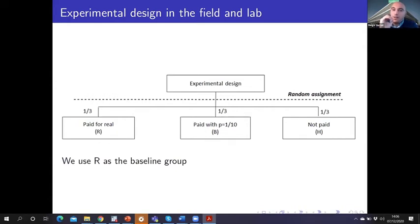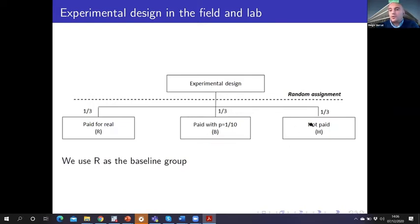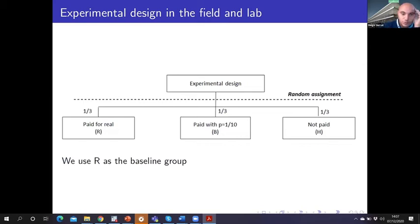Each subject in the sample was randomly assigned to one of three treatments: the treatment where subjects were paid for real (R), the treatment where subjects were paid with a probability of 1 in 10—the BRIST treatment (B)—and the treatment where subjects were not paid—the hypothetical treatment (H). We use the real group as the baseline, as it is the golden rule in experimental economics, and compare the BRIST and hypothetical treatments against the real group.